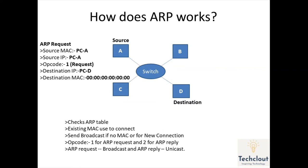Each device on the network will compare the destination IP address in the ARP request with their own IP. If it matches, the destination device will send an ARP reply. If it does not match, the device will simply discard the packet.